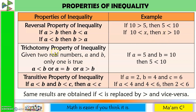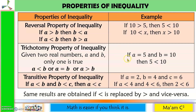Next is the trichotomy property. Given two real numbers A and B, only one is true: either A is less than B, A is equal to B, or A is greater than B. For example, if A equals 5 and B equals 10, then only one is possible — 5 is less than 10.